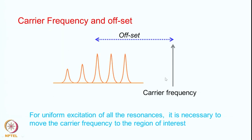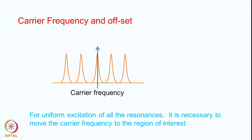If the carrier frequency omega naught is placed far away from the region of interest, some signals are excited with high intensity while others are excited with lower intensity because the RF power is lower there. We do not want that — we want uniform excitation of all spins. Therefore, we shift the carrier frequency to the center of the spectral region. Once the carrier frequency is shifted, the whole range is covered properly, all spins are excited to a similar extent, and you get similar intensities for all signals. This is crucial for quantitative evaluations. This shift is called the offset.